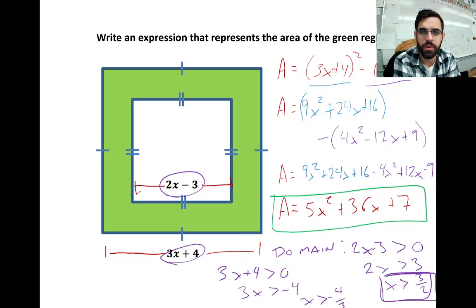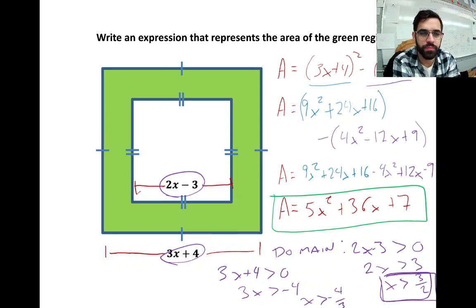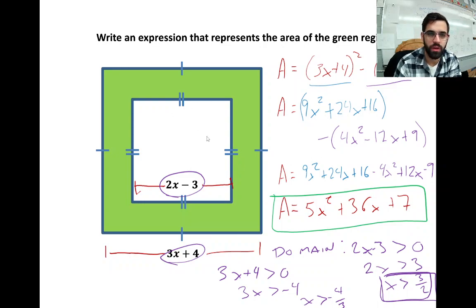This is a square inside of a square. If you take a green square and cut a hole out of the center, you get the shaded green region. The width of the inner square is 3x + 4. The width of the whole square is 2x - 3. Can you find an expression for the area of the green region? We're going to find the area of the big square, subtract the area of the hole in the center, and that represents the green shaded region. The whole area minus the little area is the green area.